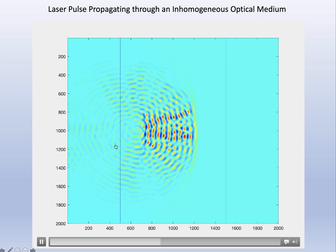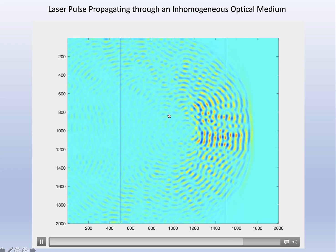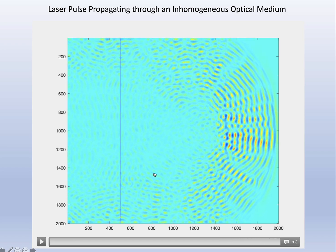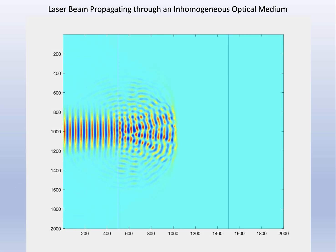This is a finite difference time domain simulation. At the trailing end of the pulse, there's all this noise going on. It's actually like it's almost boiling. Now let's actually look at a continuous laser beam.